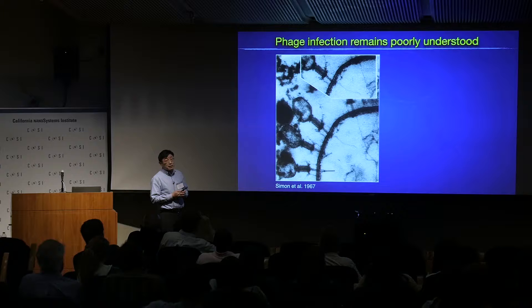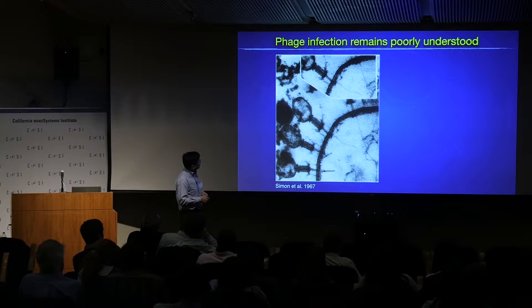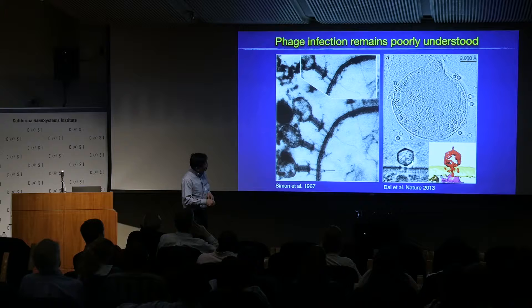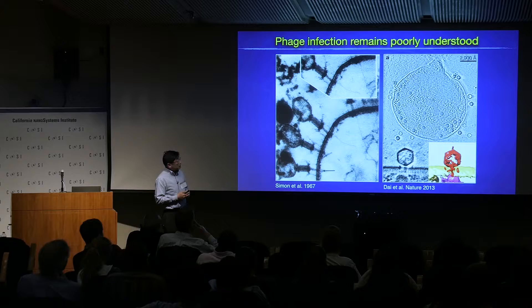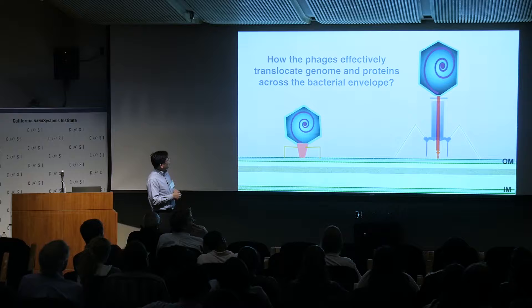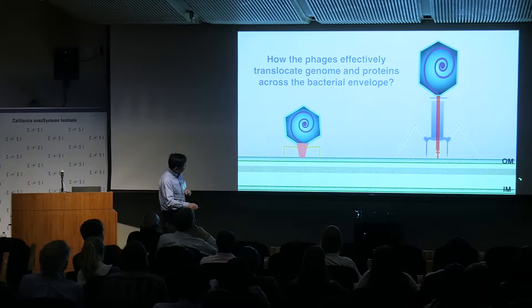DNA translocation and phage infection have not been fully understood. Part of the reason is that most studies were based on the classic T4 phage infecting E. coli using traditional EM approaches. About five years ago, cryo-EM started to be utilized to study phage infection, showing early stages of absorption, but all the details remained to be resolved.